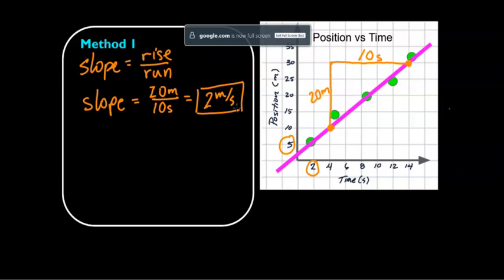What you have to be real careful with this first method is to remember that each box doesn't necessarily represent one. It could represent a different number, such as two. And then horizontally, or vertically in our case, it represented five. And horizontally, each box represented two. So you've got to be real careful with that.